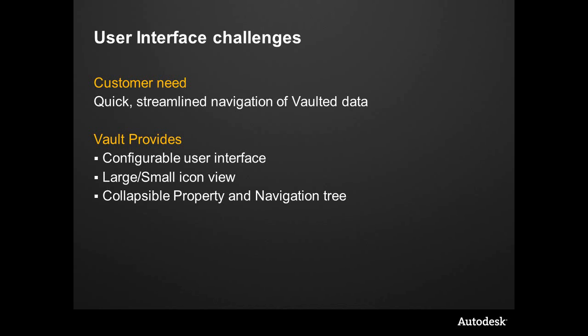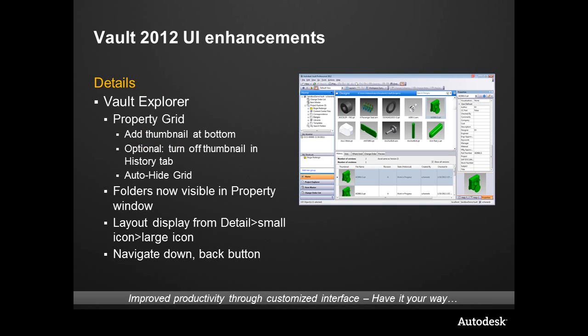Now we can collapse the project tree, collapse the navigation tree, turn on large icon view, and customize and tweak the interface to make it more palatable for people. Inside of 2012, as you see in the image here, we have the ability to simply show thumbnails only. We can really reduce the amount of information displayed on the screen — it's still available, but we can make it much easier and more accessible. We now have the ability to auto-hide the grid and turn off the thumbnail.